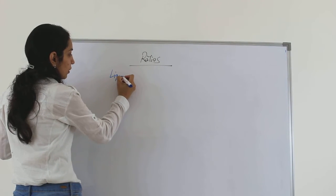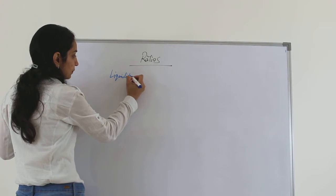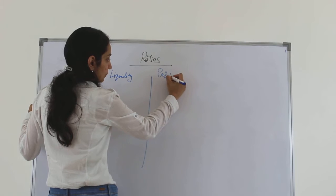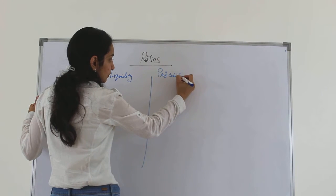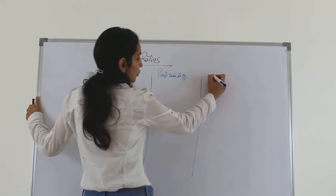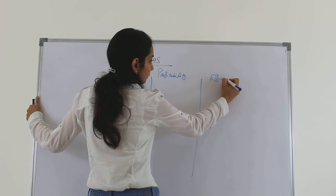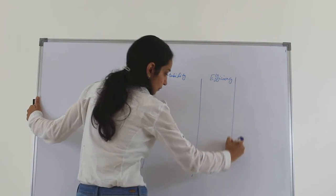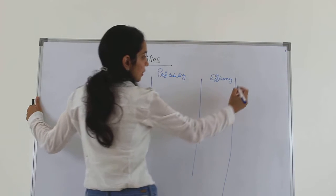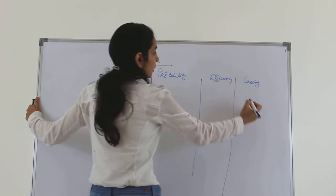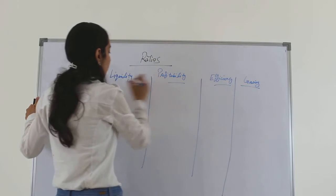Let's try to classify the ratios. The first type of ratio is called liquidity. The second classification would be profitability. The third classification would be efficiency. And the fourth classification would be gearing. Let's try to understand each of the categories.